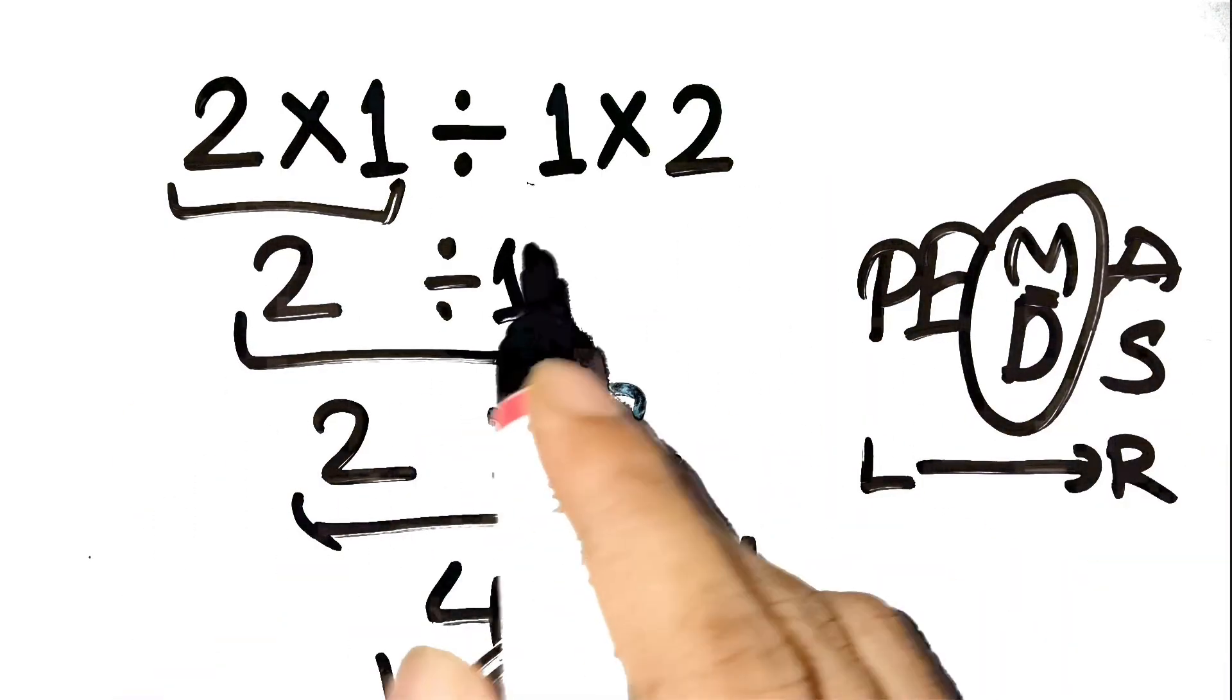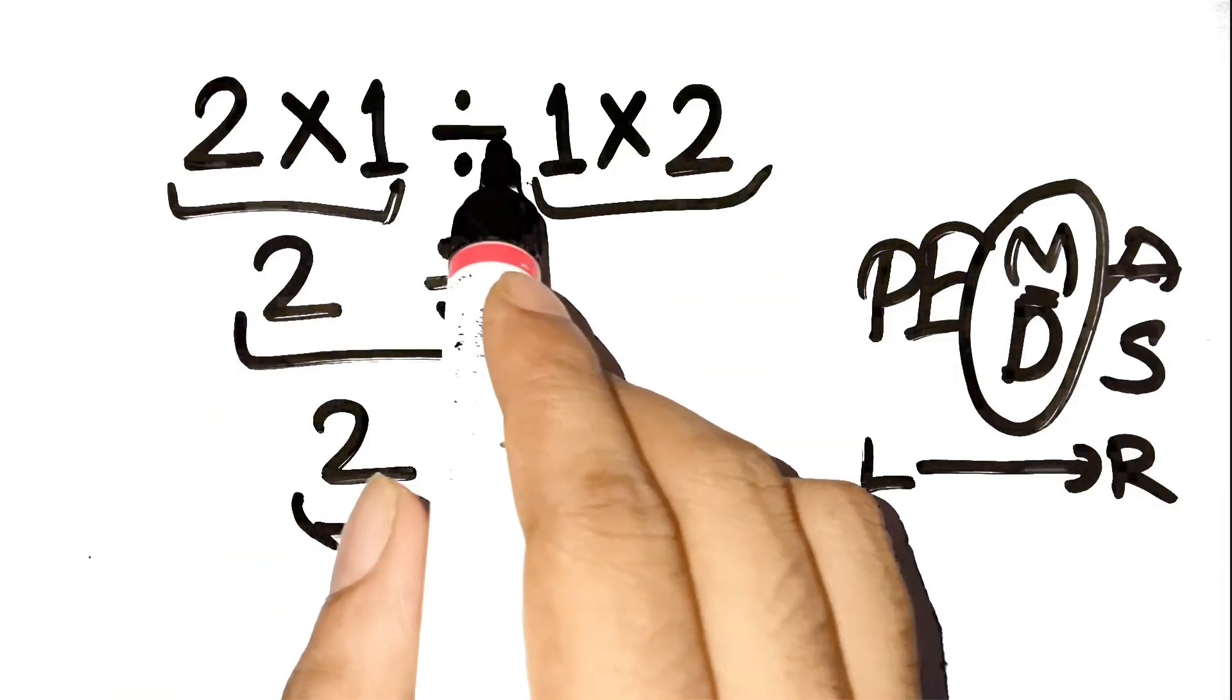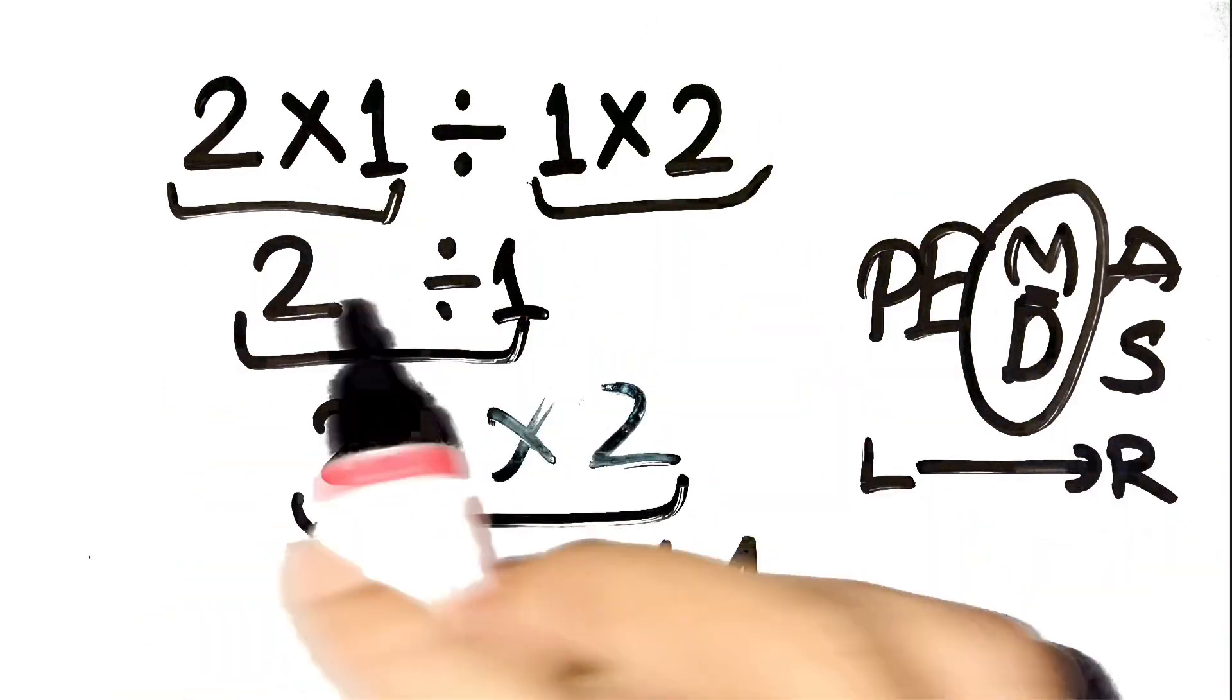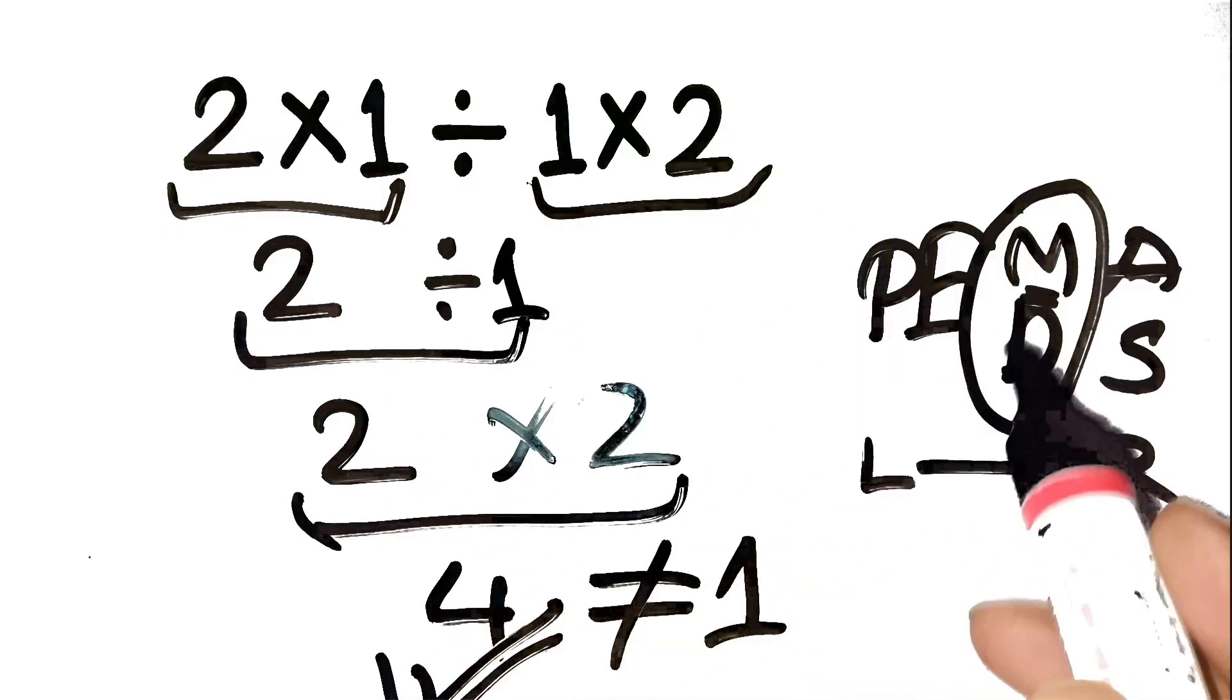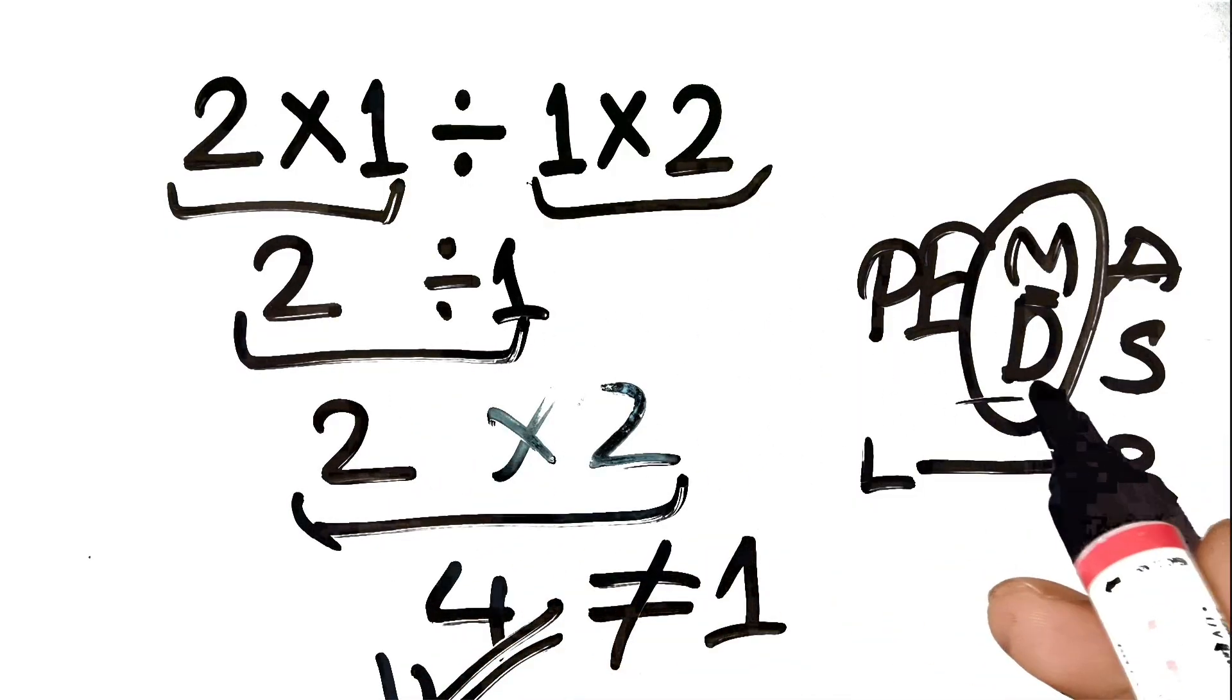Most people automatically group the multiplications and forget that division is on the same level. So, next time you see something like this, don't rush. Just go step by step from left to right. That's the secret.